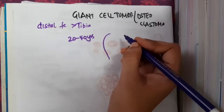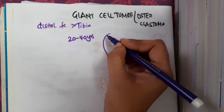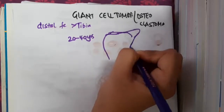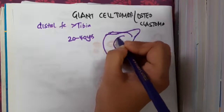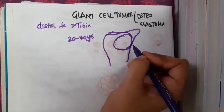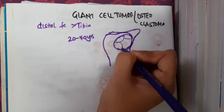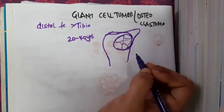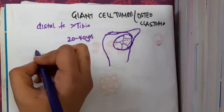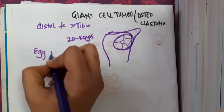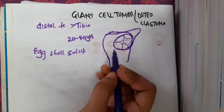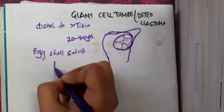The tumor is eccentrically located. You will see that the tumor gives the appearance of a soap bubble. Bubble appearance is seen in giant cell tumor. In the later stages it gives a type of calcification called egg shell calcification. So bubble appearance is seen and it is a pulsatile tumor where you see pulsations.